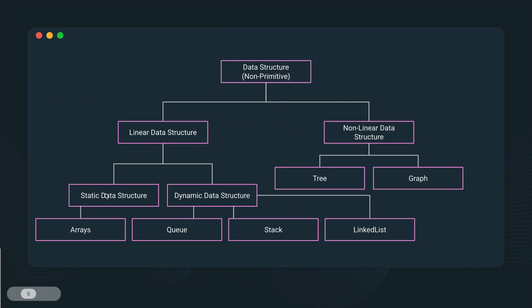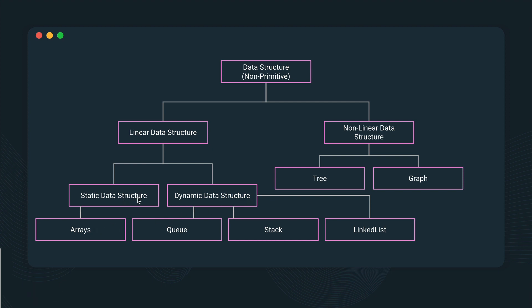From linear, you have static and dynamic data structures. Static ones have a fixed data size, while dynamic data structures have a size that can change — it can grow and shrink depending on the requirement at runtime. In static data structures we have arrays, and in dynamic we have queues, stacks, and linked lists. In non-linear data structures we have trees and graphs.